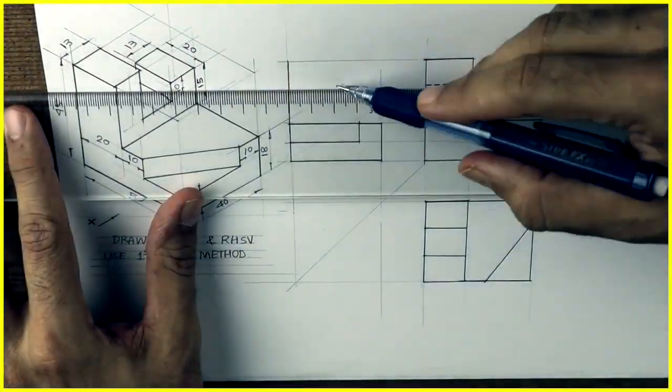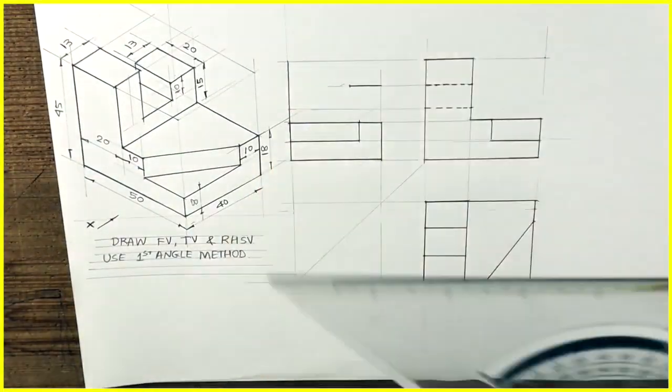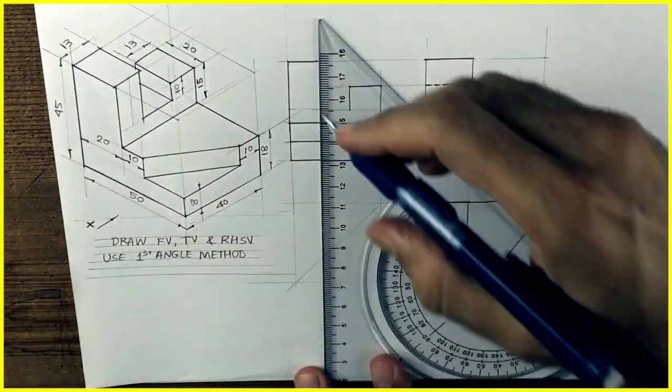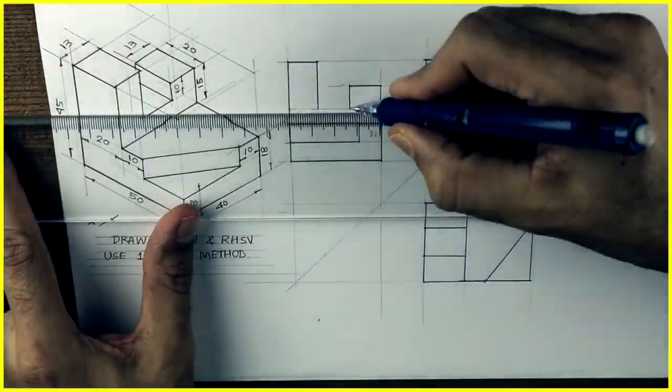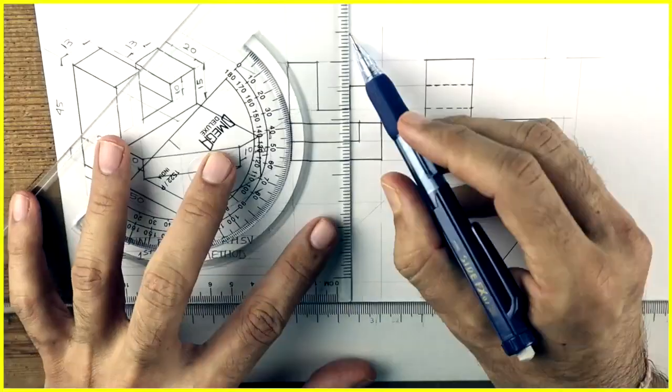Then we'll project from front view those two dotted lines. 13. Go down by 10. Again 13. Go down straight. So you'll get the required side view. Then we'll do the dimensioning and labeling. Thank you.